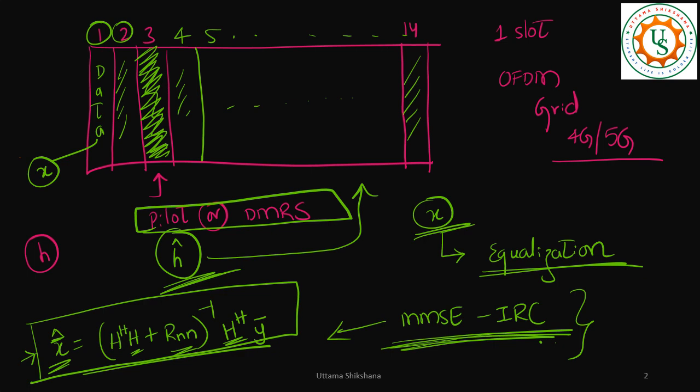I hope you got the clarity. Wherever DMRS symbol is there we will perform the channel estimation. Basically we have fixed least square as the best strategy to use to perform the channel estimation considering a practical scenario. And across the data we have chosen MMSE as the best strategy to go for considering the practical scenario.